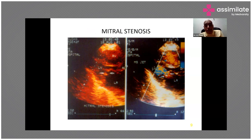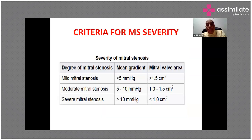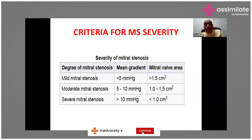You can see the thickened mitral valve indicated by arrows, an enlarged left atrium, a normal-sized left ventricle, and an enlarged right ventricle due to pulmonary hypertension. For mild mitral stenosis: mean pressure gradient less than 5 mmHg and mitral valve area greater than 1.5 cm².